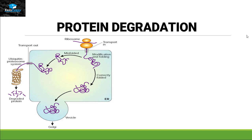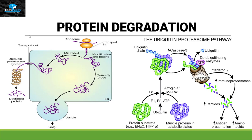Last but not least, protein degradation is also a post-translational modification. Sometimes protein translation is not done properly, or external factors damage the protein, so it undergoes degradation. Degradation is initiated when a ubiquitin chain attaches itself to the protein, signaling to the proteasome to recognize and degrade it. Once the ubiquitin chain is attached, the proteasome degrades the protein into amino acids and the protein loses its function.